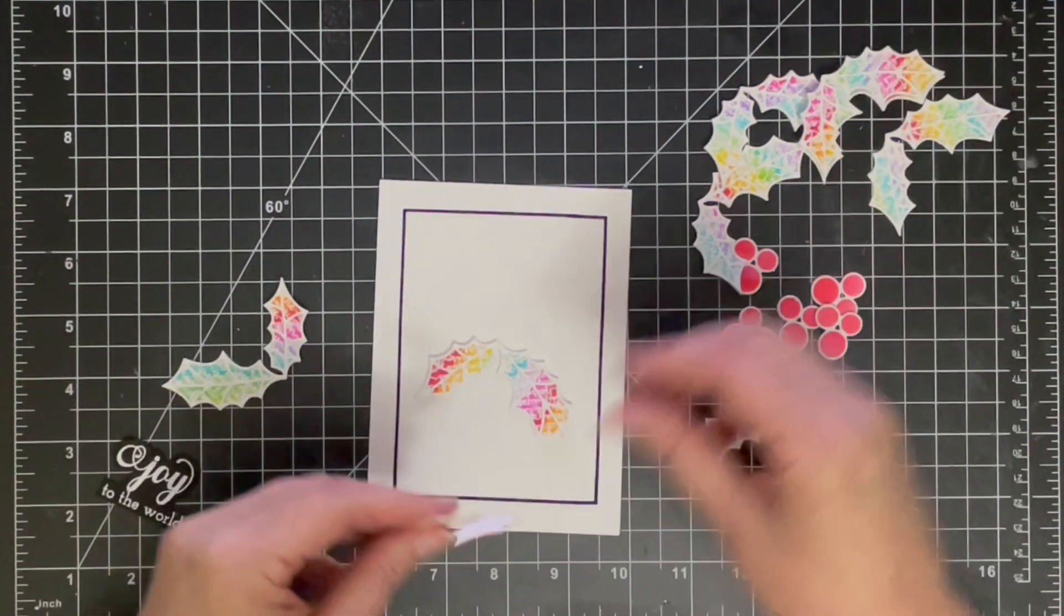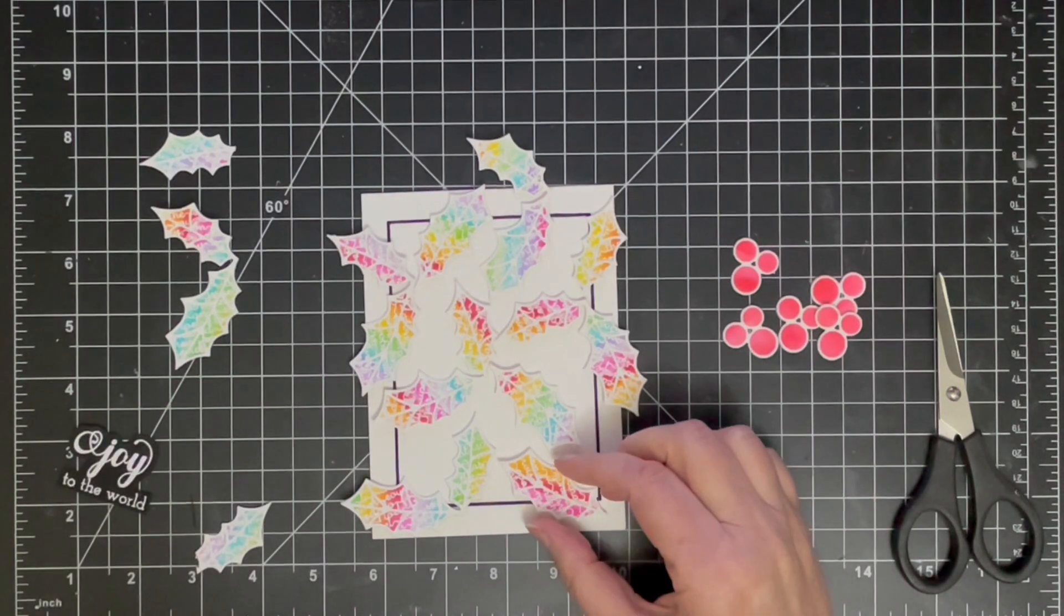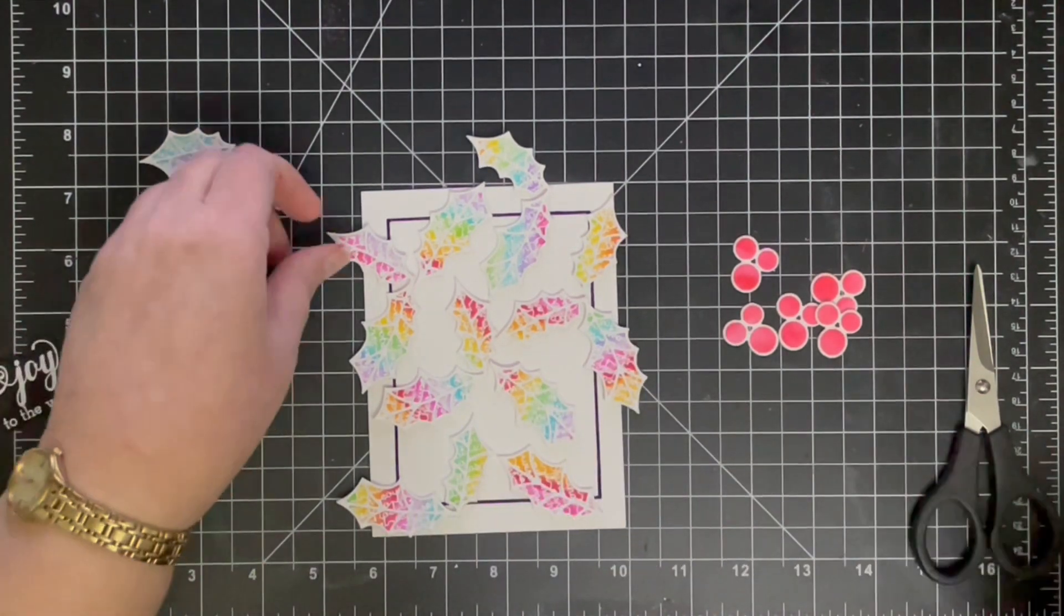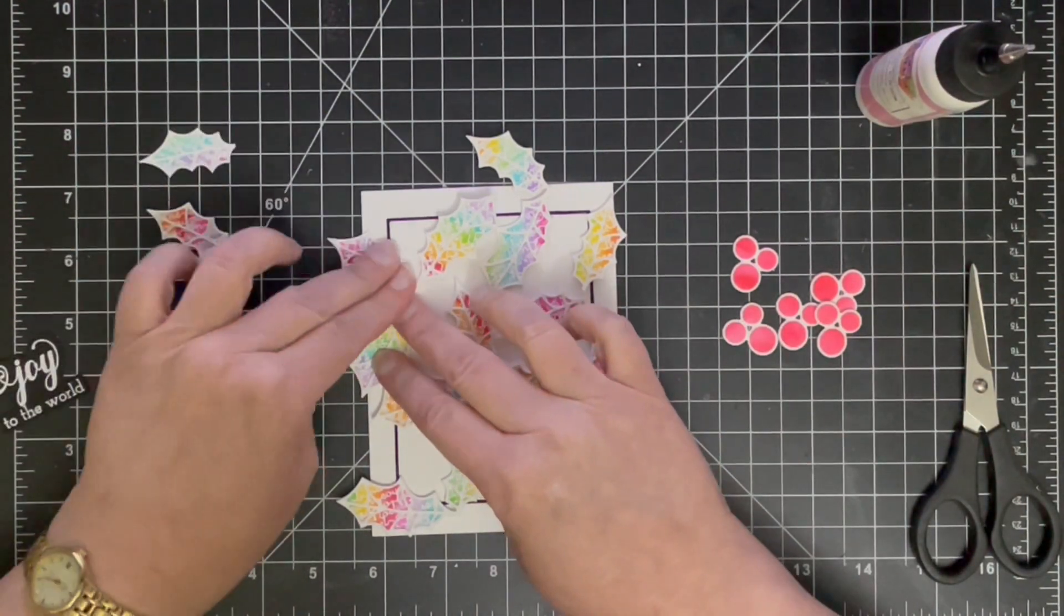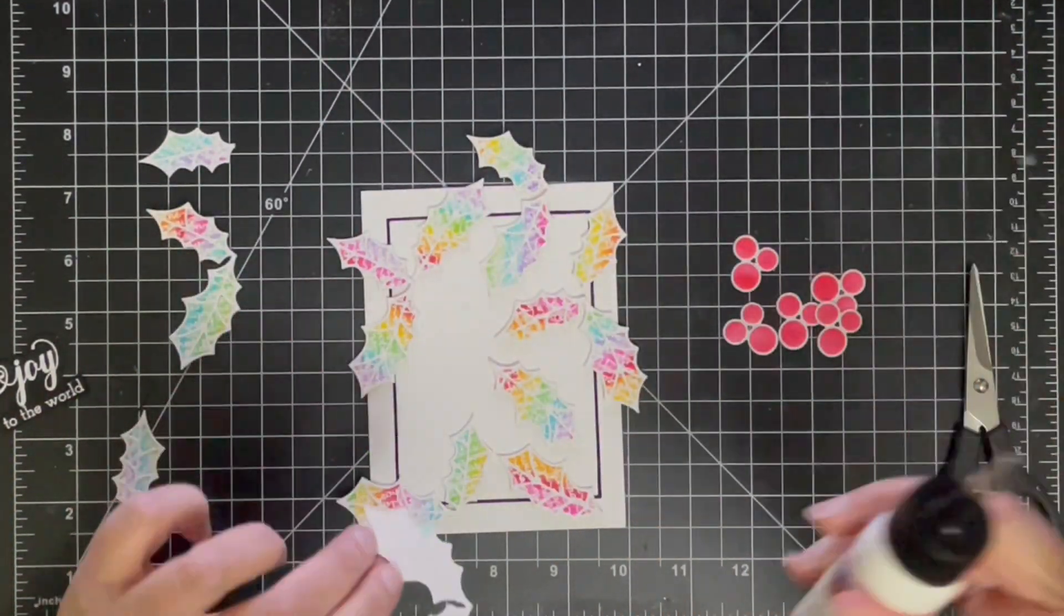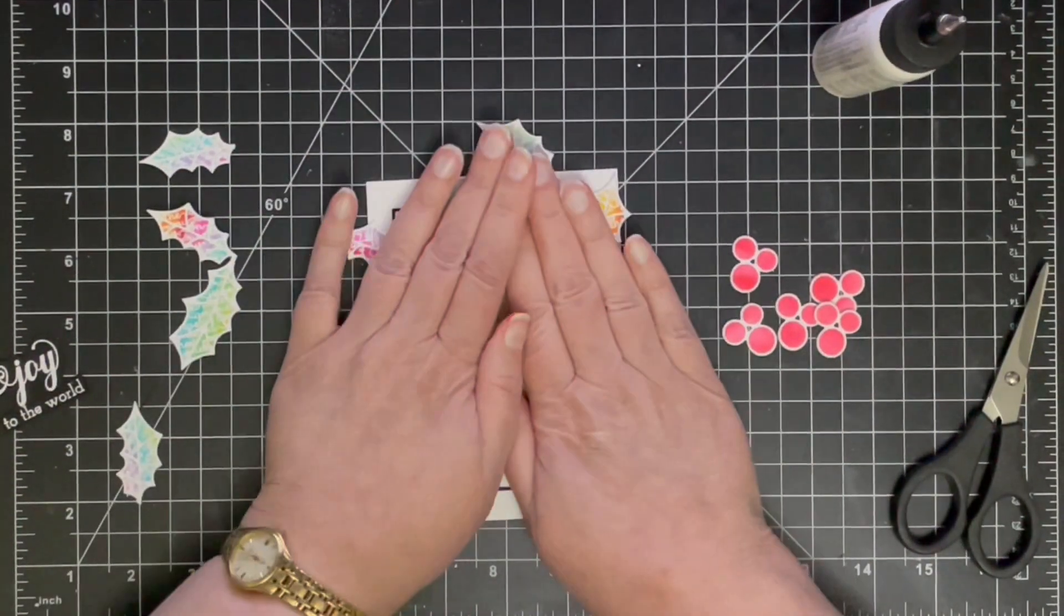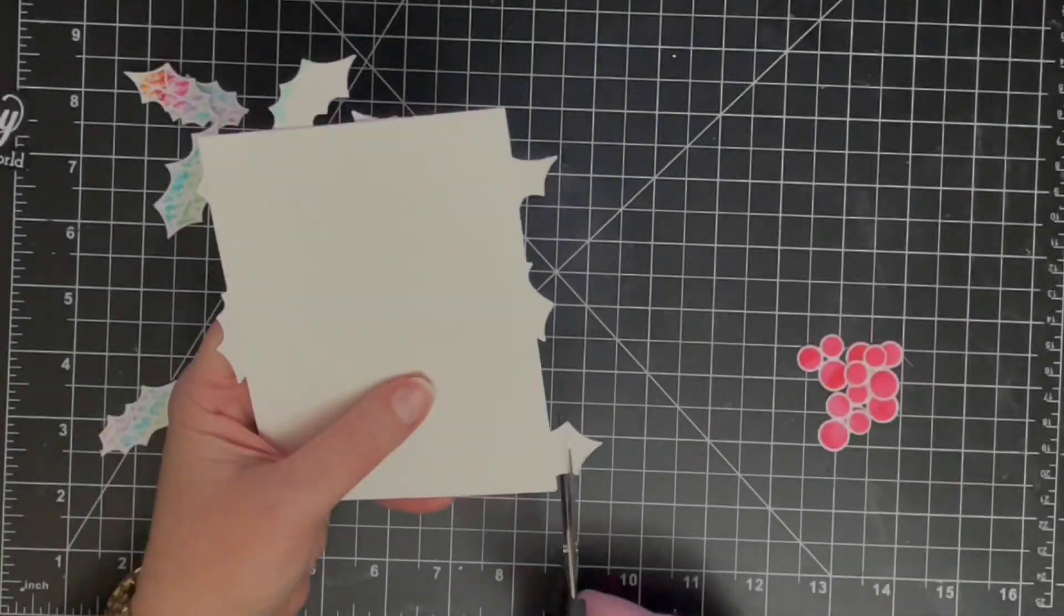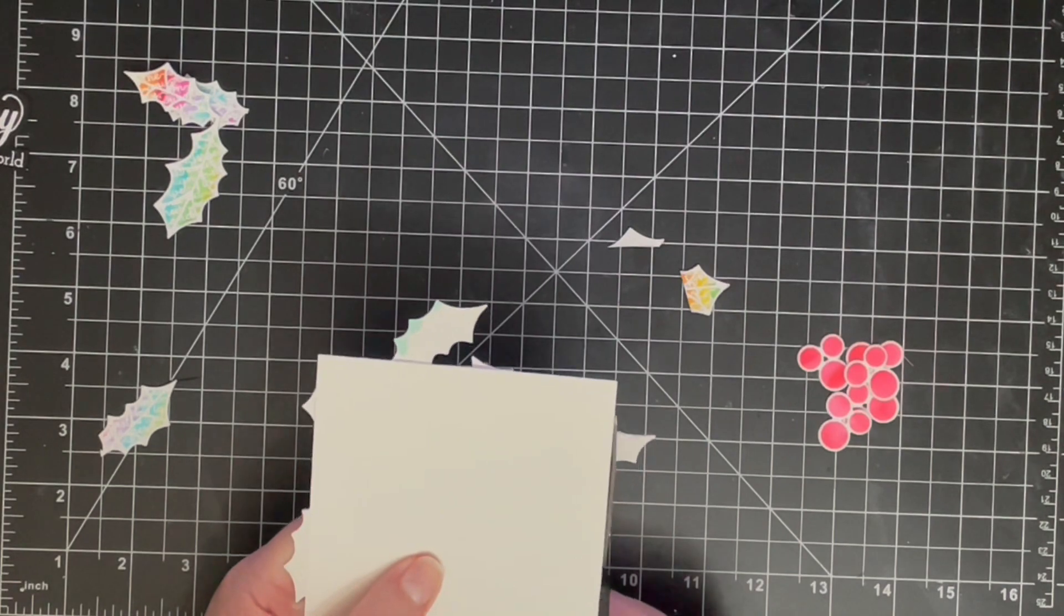So now all I'm doing is just arranging these holly leaves and holly berries onto my card front, and this took a while on the first card that I made. But this one, I tried to pretty much just replicate the arrangement as I had on the first one. But you'll notice that even though this die actually cut out two leaves at a time, I'm arranging quite a few of them with three leaves coming from a central point, and I'll be placing my holly berries at the center of those points.